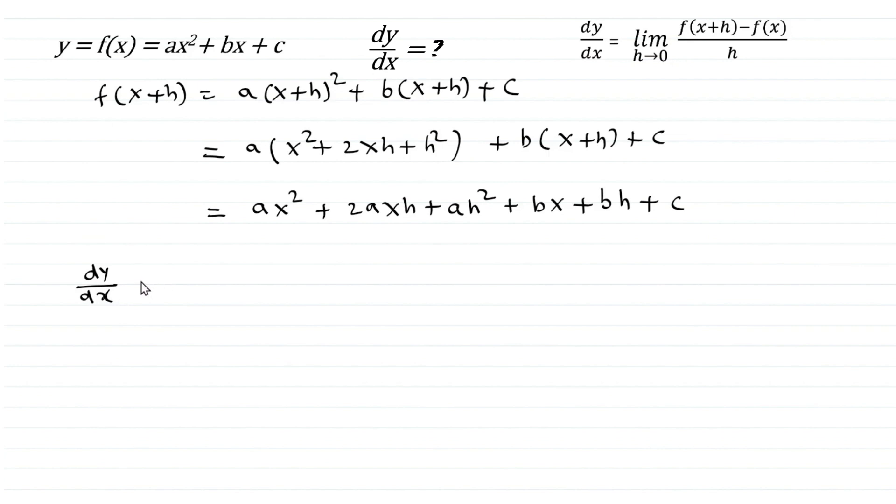Now substituting in the formula we get dy/dx equals limit as h tends to 0 of f(x+h) that we just calculated. We copy it here. And minus f(x) means each term of f(x) will be placed with sign changed: minus ax² minus bx minus c and this all divided by h.